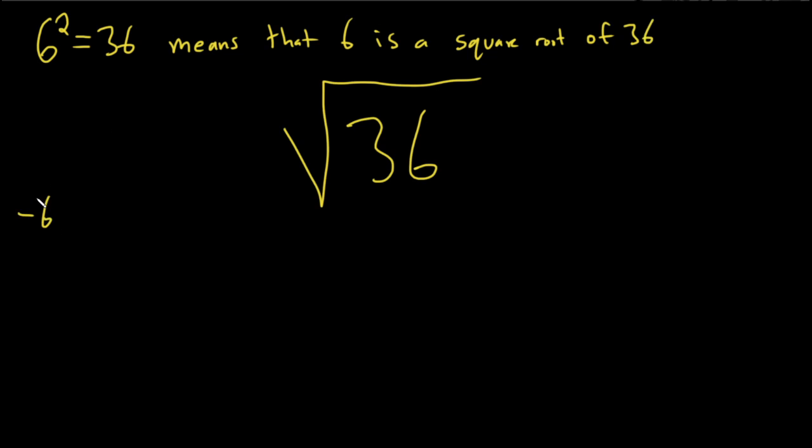Likewise, if you take negative 6 and you square it, you also get 36, and this means that negative 6 is a square root of 36.